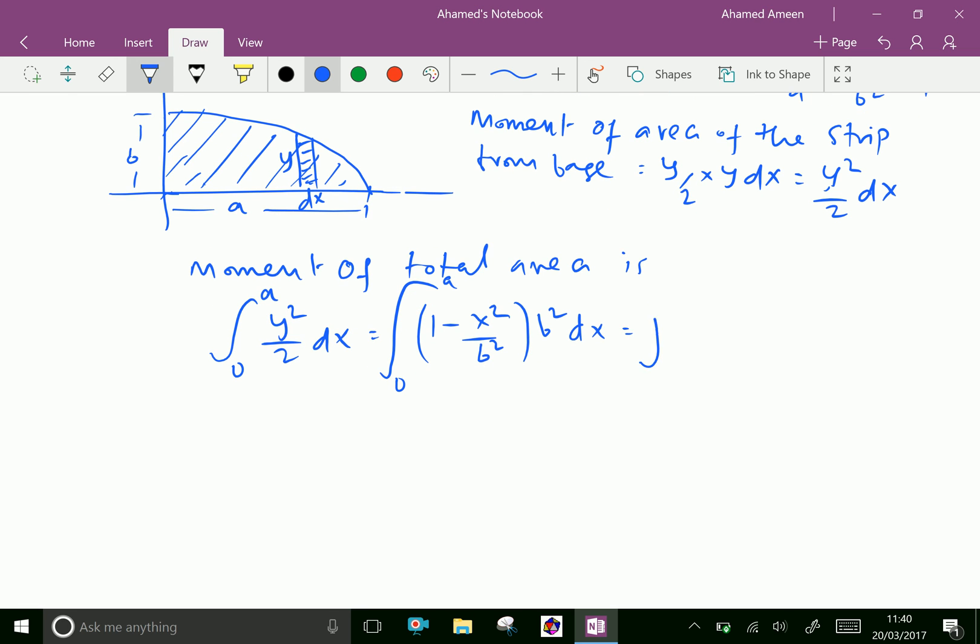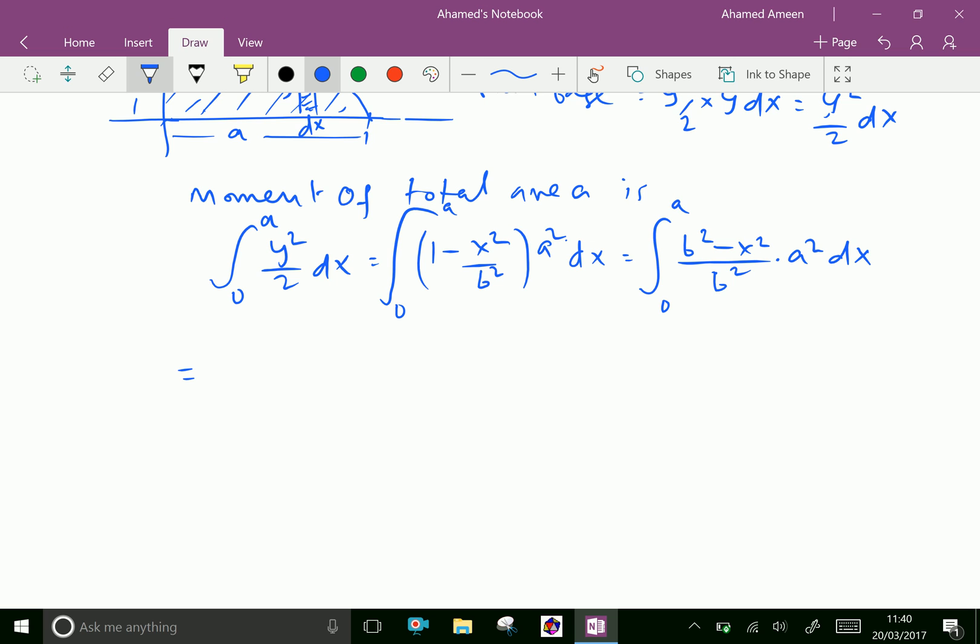Which is equal by simplification to the integral from 0 to a of a squared over 2 times b squared minus x squared over a squared dx, which equals a squared over 2 b squared times the integral of b squared minus x squared dx from 0 to a.